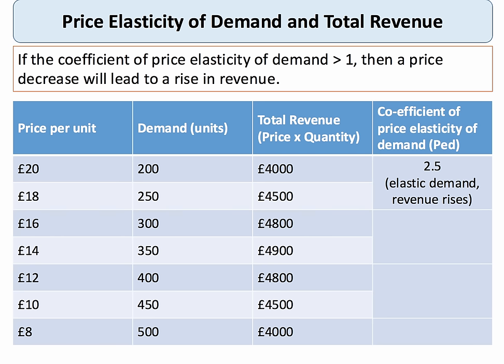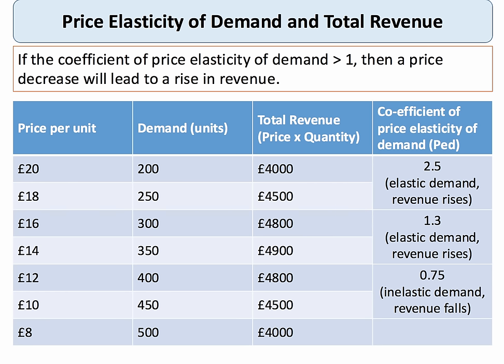Demand in that example is elastic and total revenue goes up. If we cut the price from £16 to £14, demand again increases by 50 units and total revenue still increases slightly — the price elasticity of demand is 1.3, just the elastic side. But if we look at a further price fall from £12 to £10, again a 50-unit increase in demand, this time total revenue goes down. The elasticity for that price reduction is 0.75 — inelastic. So when demand is inelastic, a price fall causes total revenue to go down.